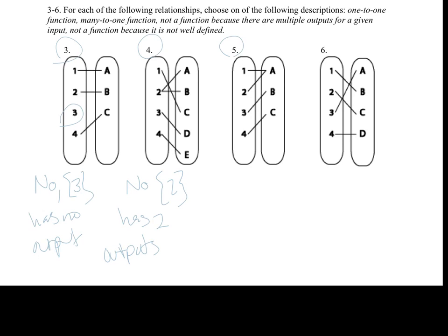Now let's look at example five. One has an output, two has an output, three has an output, four has an output. Does every input have just one output? One only goes to one place, two only goes to one place, three only goes to one place, and four only goes to one place. So yes, this is a function. Now, what type of function is it — many-to-one or one-to-one? Many-to-one means many inputs go to one output. We see that one and two both have the same output, so this is many-to-one.